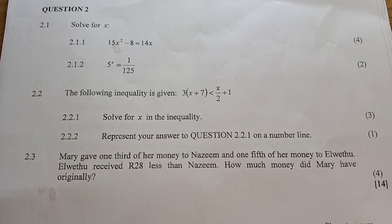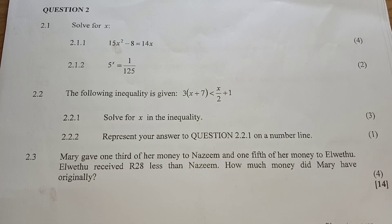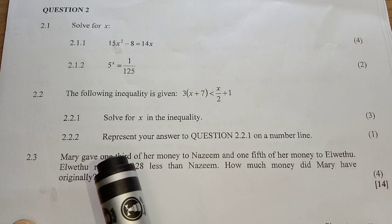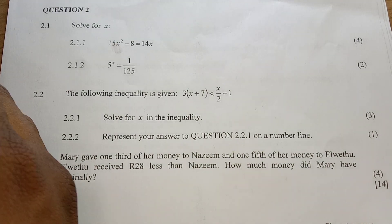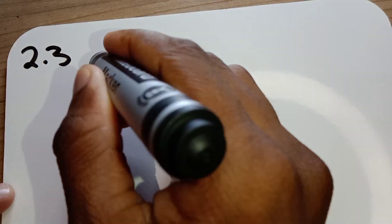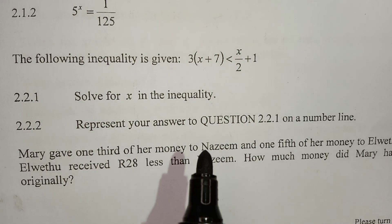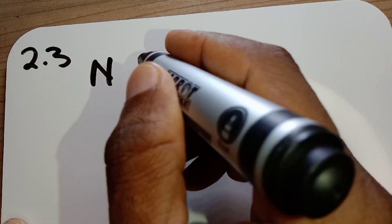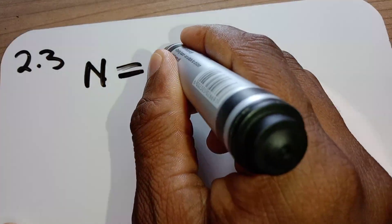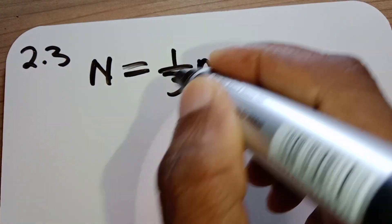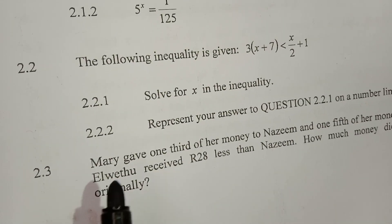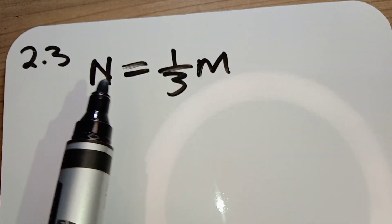We are on question 2.3. Mary gives one third of her money to Nazeem. When we talk about one third, we write it as one over three. We use M for Mary and N for Nazeem. So Nazeem is having one over three of Mary's money.